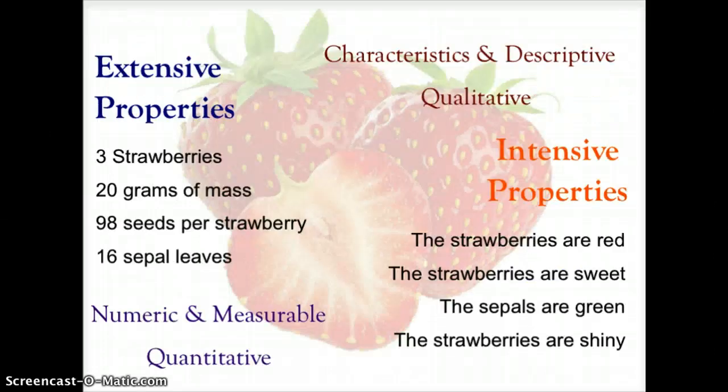Extensive properties would be, we have here a picture of three strawberries, 20 grams of mass, there are 98 seeds per strawberry, and 16 sepal leaves. These are numeric, measurable, quantitative properties—extensive properties.